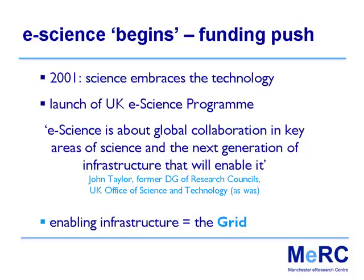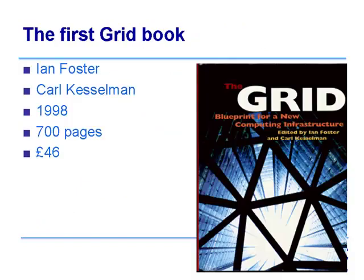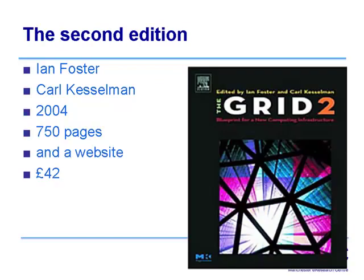So this programme was launched in 2001, and the enabling infrastructure at that time was known as the grid. People used to think of e-science as the grid. If you want to find out about the grid, there's the original book from 1998 — 700 pages, £46 — and then another one from 2004 that's a bit longer. But I'll try to cut the need for that in a moment.